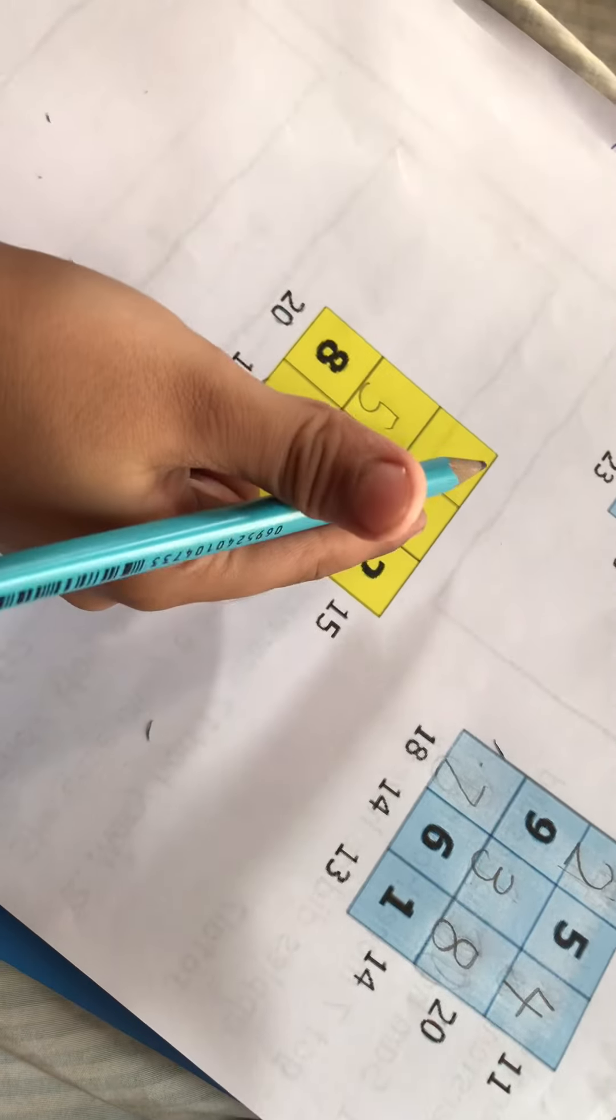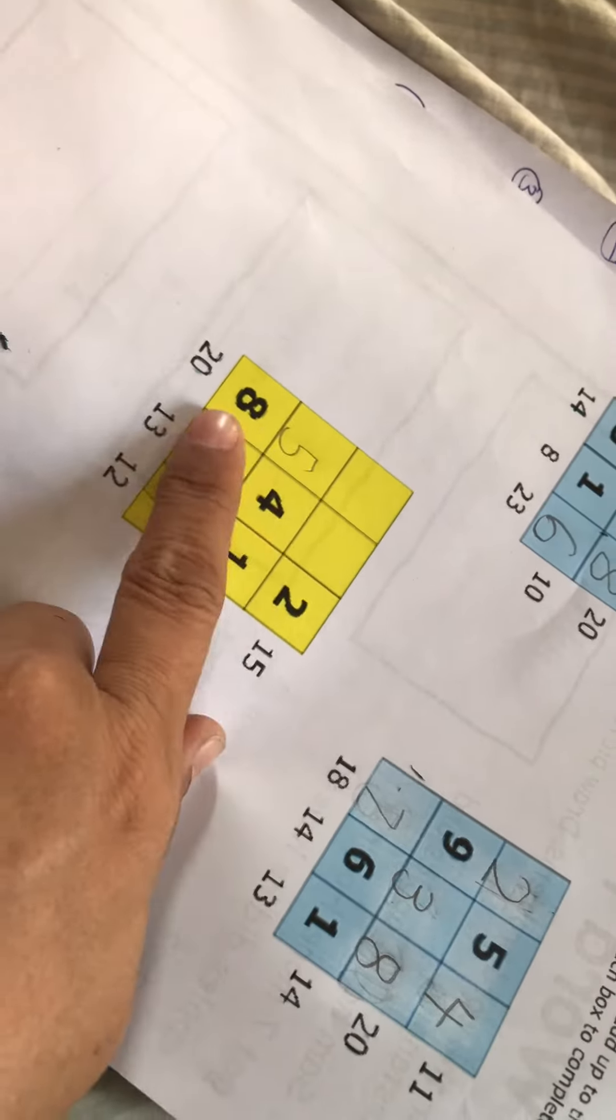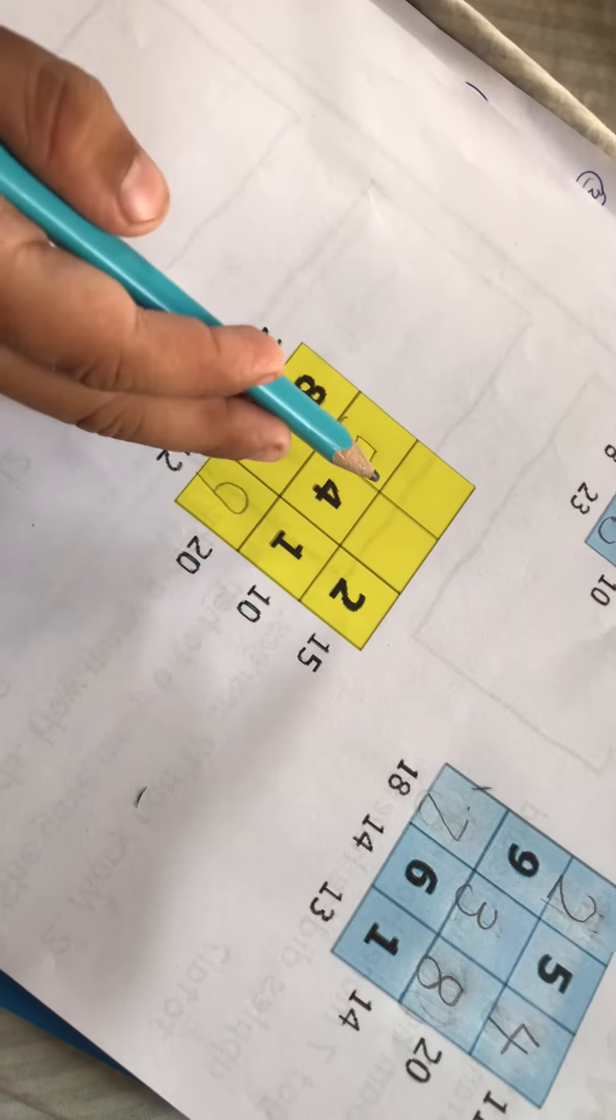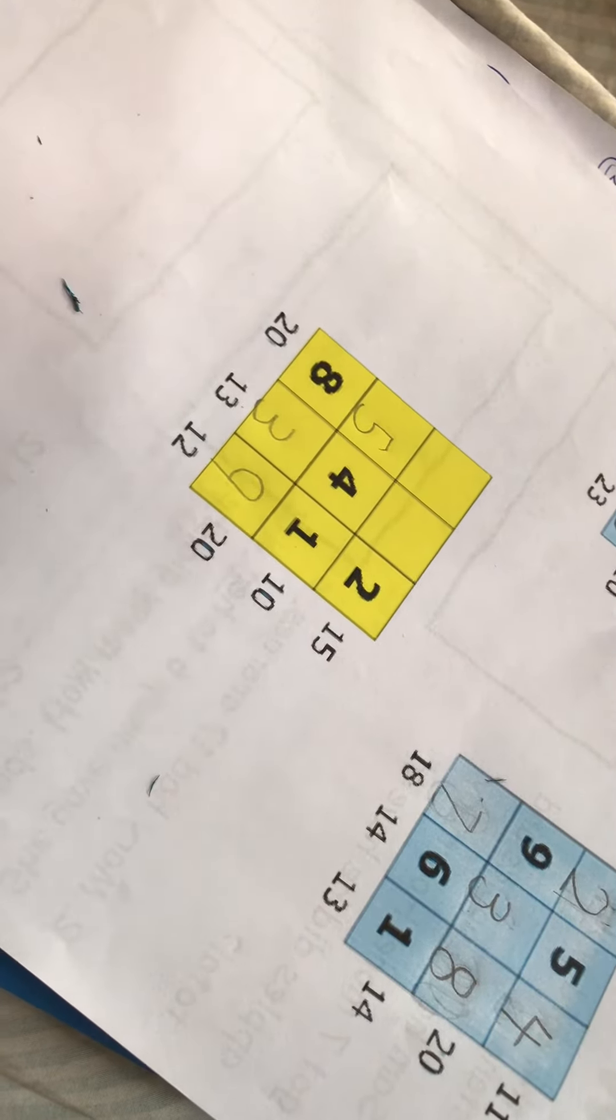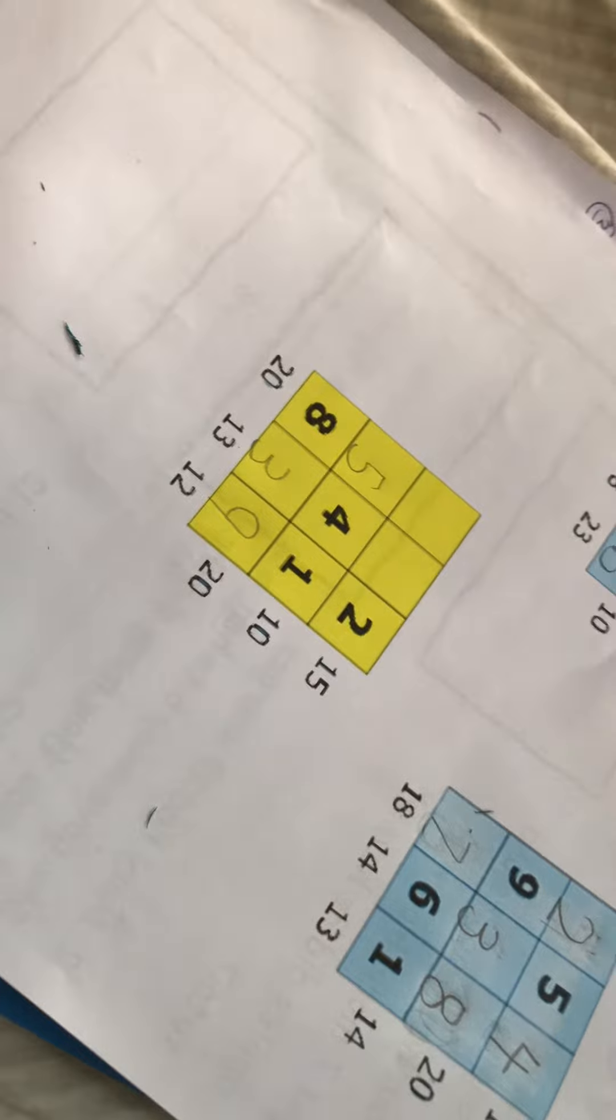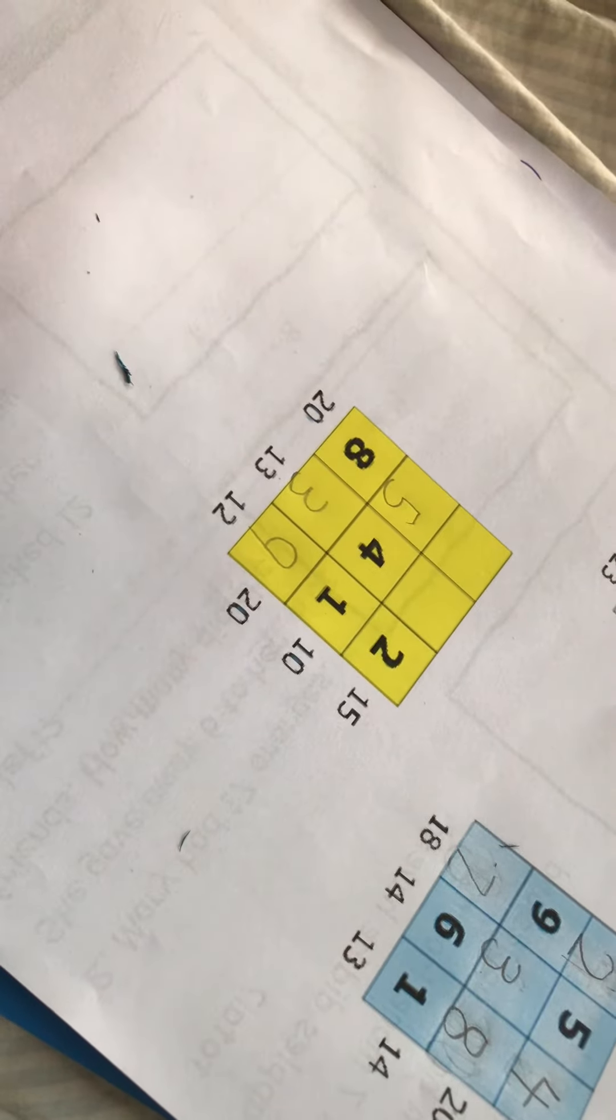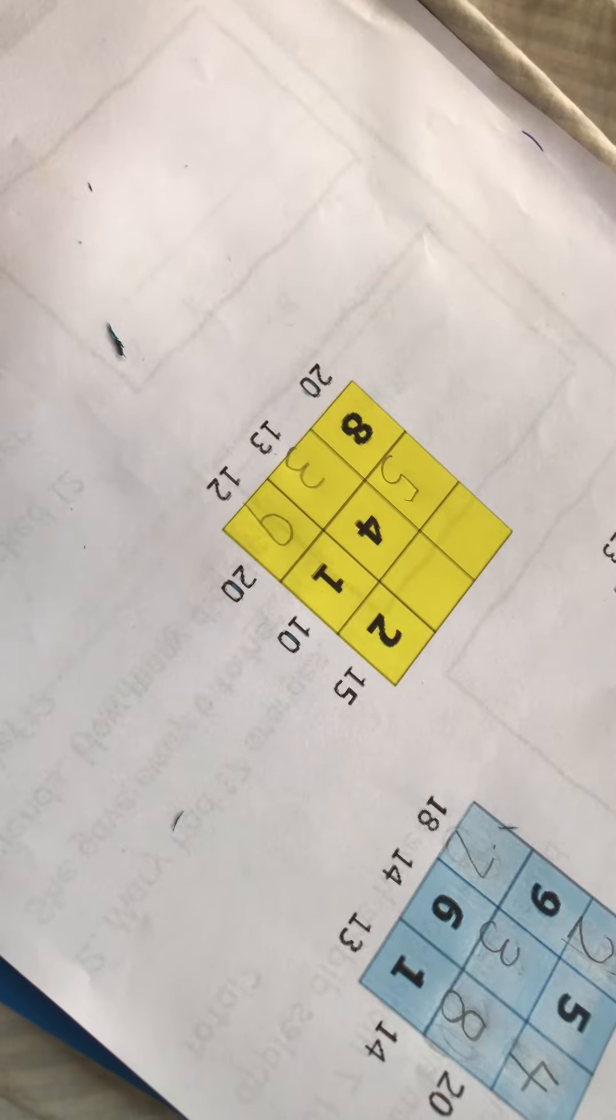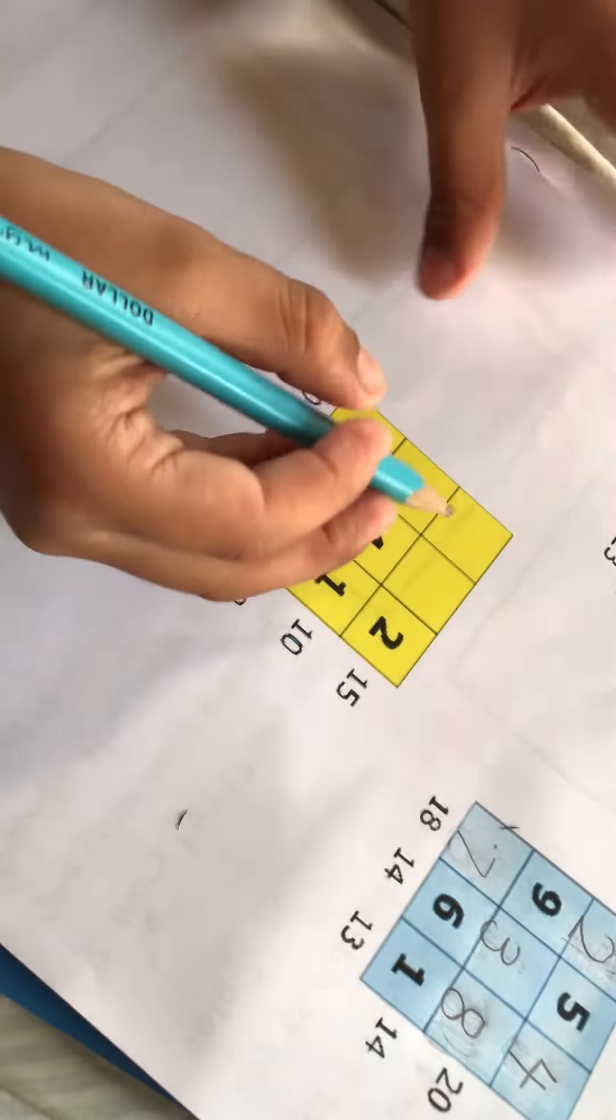Okay there is no number here. So you need to find out the number. What will make 20, 20. Okay 8, 5. So 8 and 5 makes 13. Then 13 plus 7.